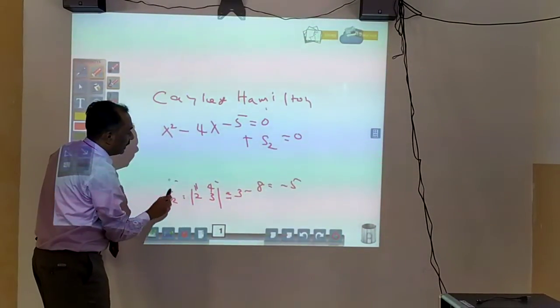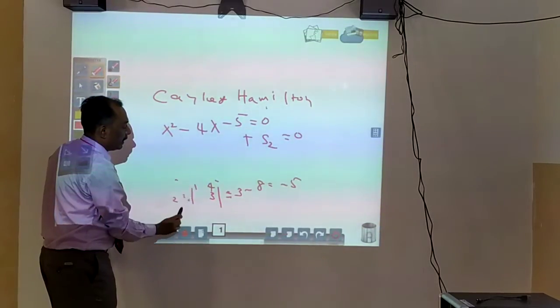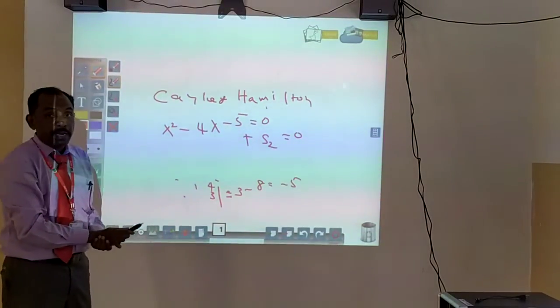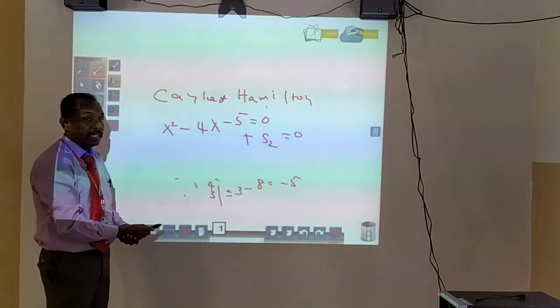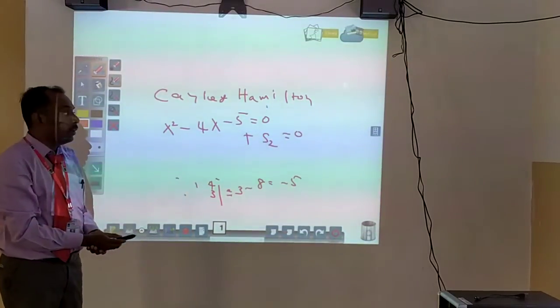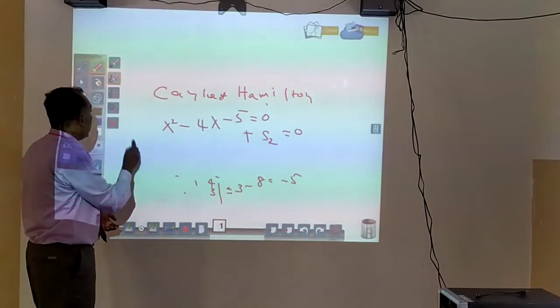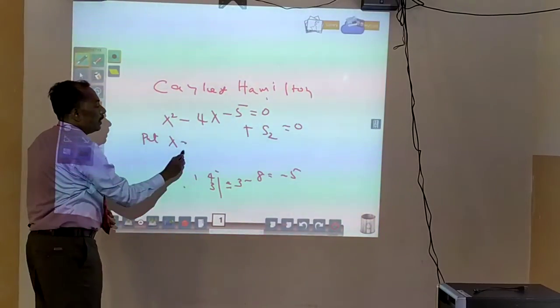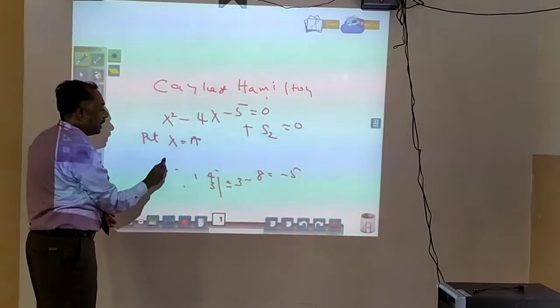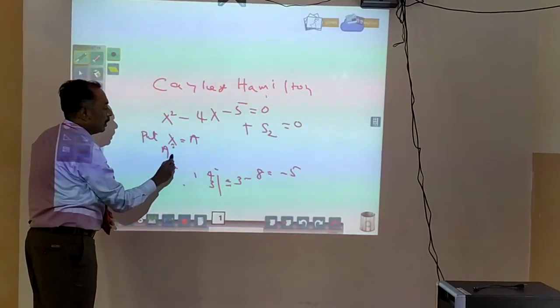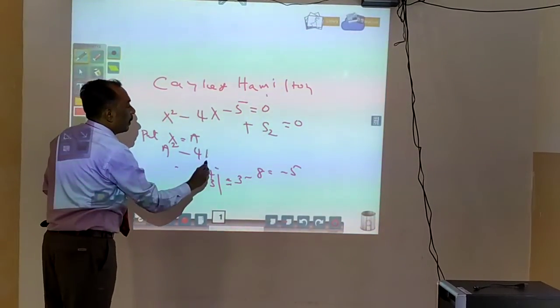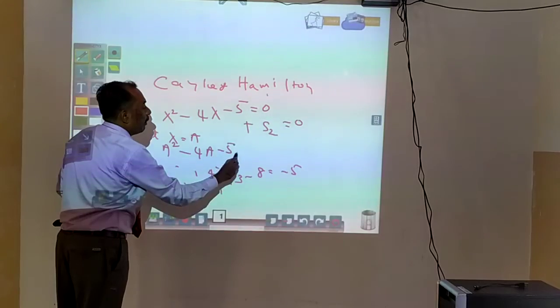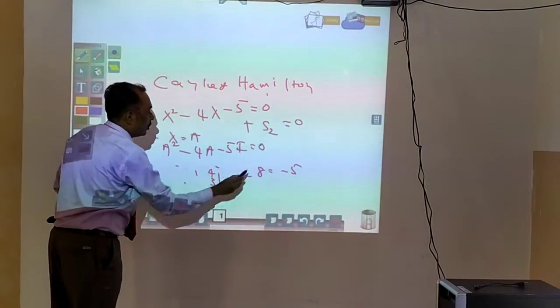What is the Cayley-Hamilton theorem? Every square matrix satisfies its own characteristic equation. So now we replace lambda with A. The equation becomes A square minus 4A minus 5I equals 0. This is the Cayley-Hamilton equation.